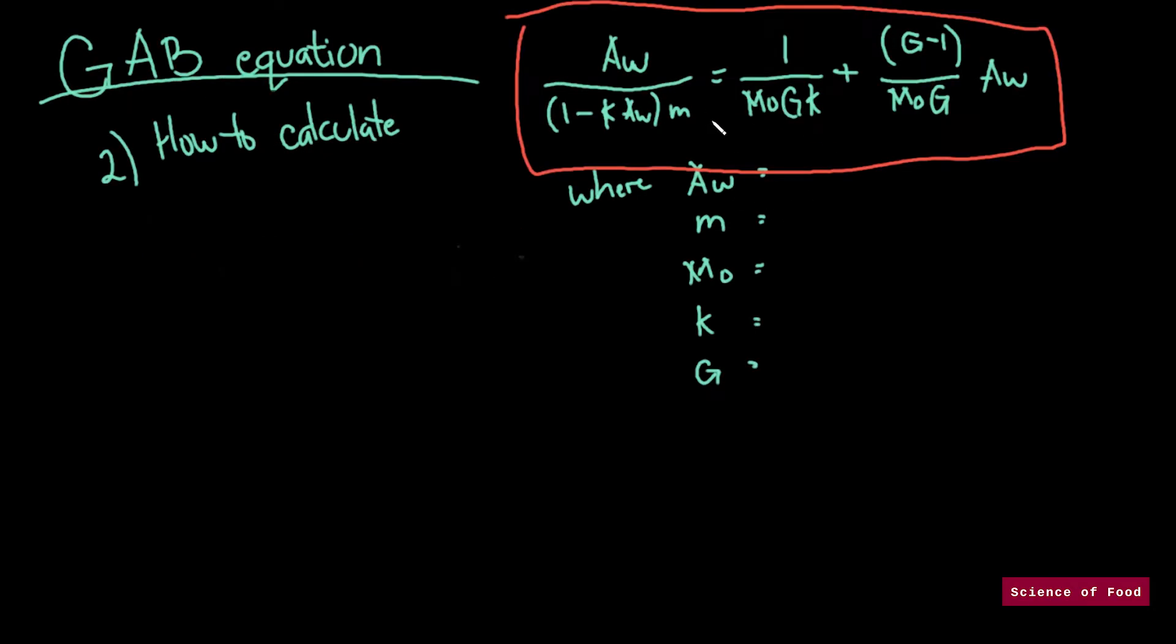So this is the GAB equation right here. And if you look at it, it's quite similar to the BET equation except for an additional variable, which is the variable k. Aw is the water activity. M is the moisture content. M0 is the monolayer water or monolayer value. K and C are constants.